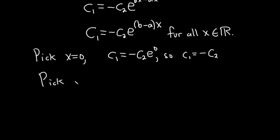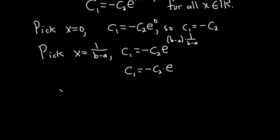Let's have fun with it. We know a is not equal to b. So let's pick x equals one over b minus a. That sounds fun. Check this out. Just trying to make it look fun. So I haven't done this problem. So this is e, b minus a times one over b minus a, just to make it a little bit cool. C1 is equal to negative c2 times e. Okay, so we have two equations now. We have that c1 is equal to negative c2 and c1 is equal to negative c2 times e.